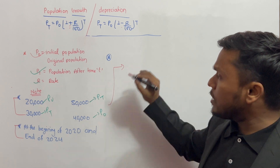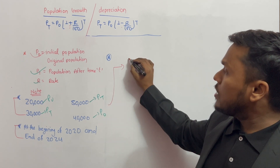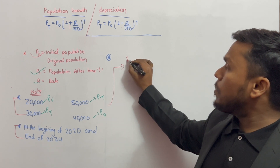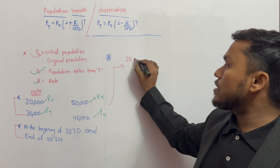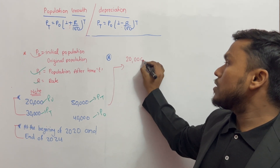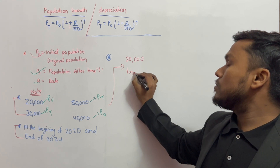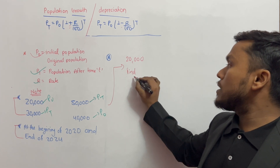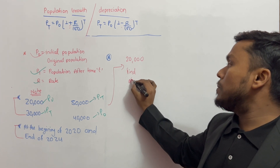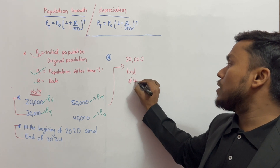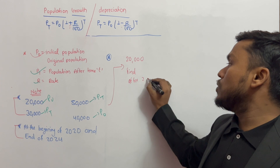For example, I have a population of 20,000. Find the population after 2 years.